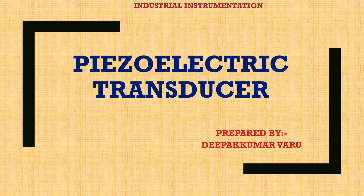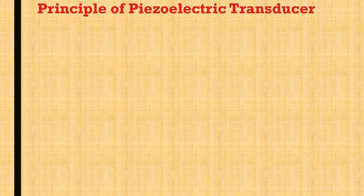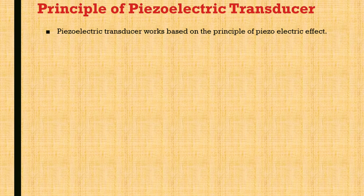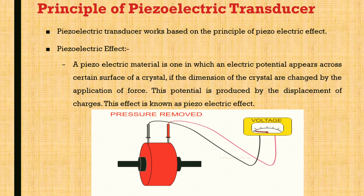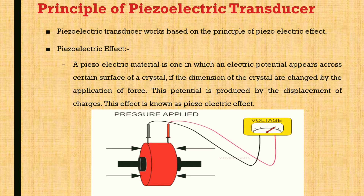In today's video we will see about piezoelectric transducer. The piezoelectric transducer works based on the principle of the piezoelectric effect. A piezoelectric material is one in which an electric potential appears across certain surfaces of a crystal if the dimensions of the crystal are changed by the application of force. This potential is produced by the displacement of charges, and this effect is known as the piezoelectric effect. As seen in this animation, when pressure is applied, a voltage is induced which we measure with a voltmeter.